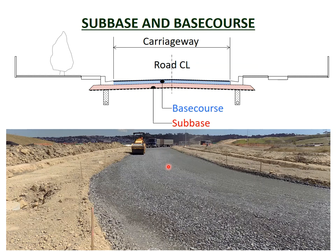While the GAP65 sub-base is not as strong as the base course, this is not a problem because the base course distributes the surface loadings down through its depth. At the sub-base level, the stresses and loadings are not as high as at the surface because they have been distributed. The sub-base and base course layers distribute loading from the surface so that by the time it reaches the subgrade, it is at a low enough level that the subgrade can support it without failing.